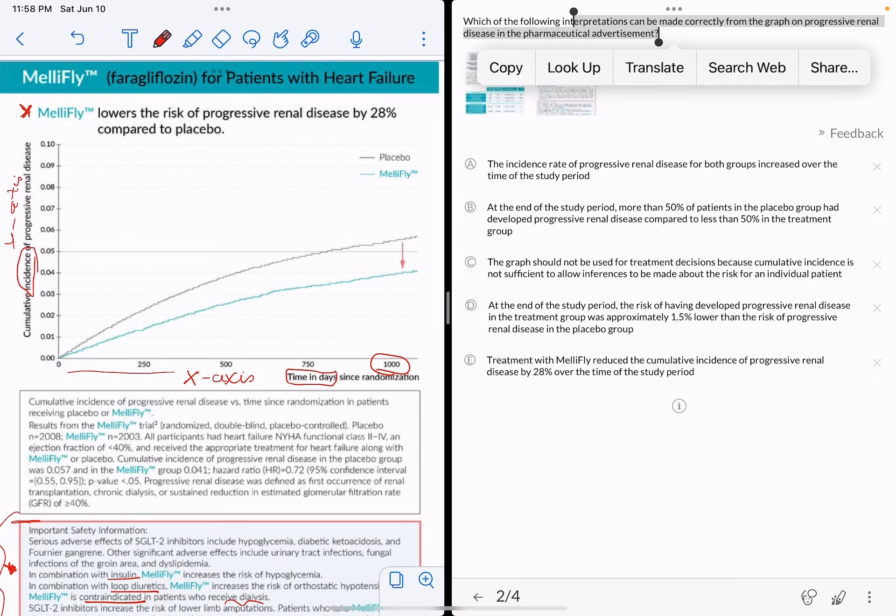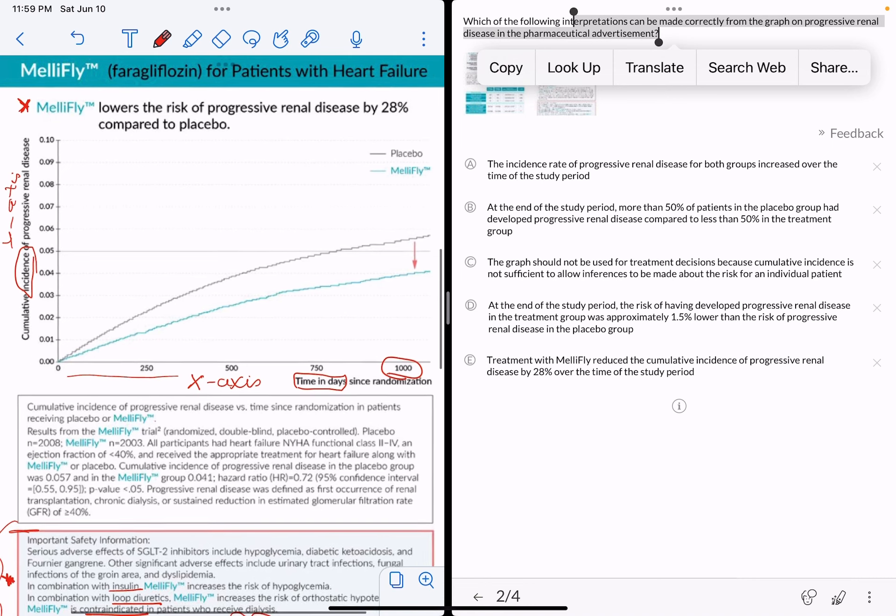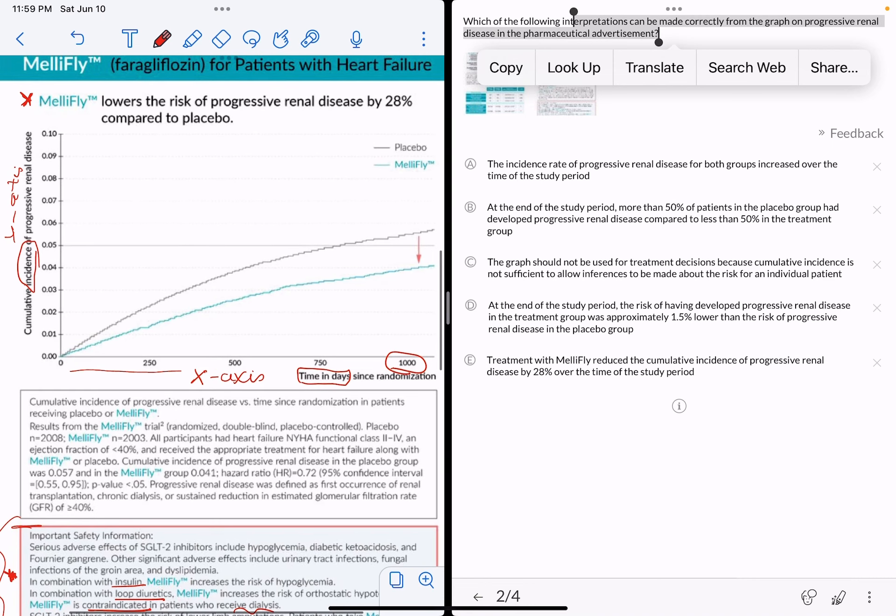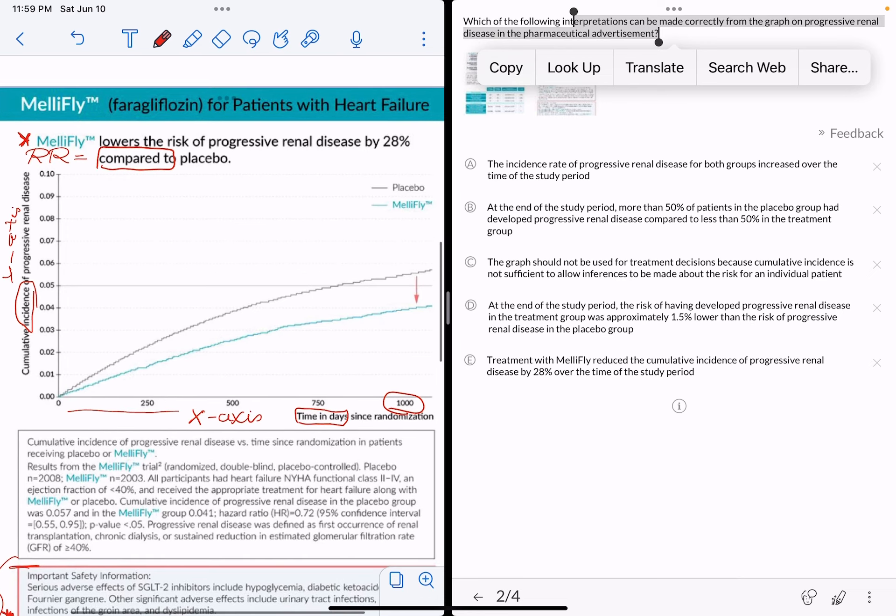And the ad here claims that MelliFly lowers the risk of progressive renal disease by 28% compared to placebo. Compared to equals relative risk. So the relative risk reduction is 28%. This is not an absolute number, right? This is as compared to placebo.